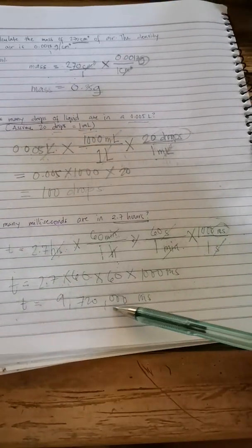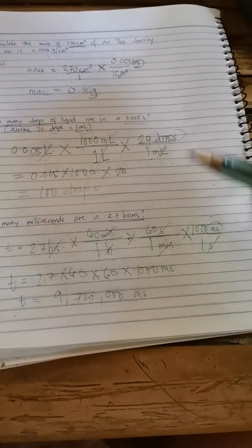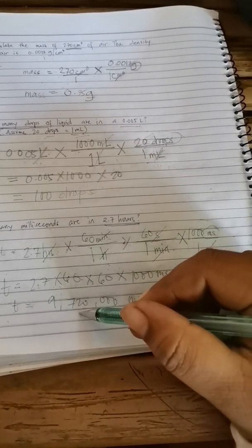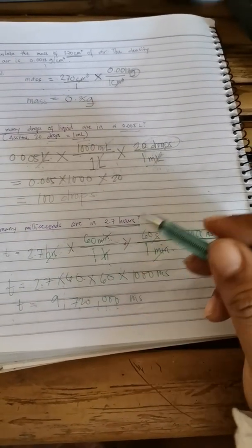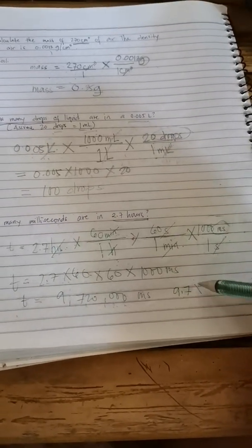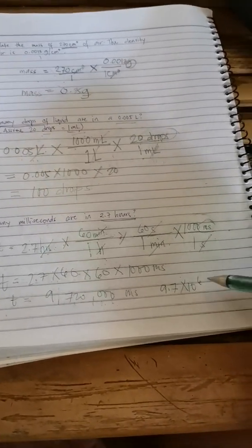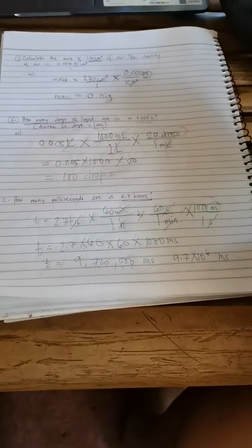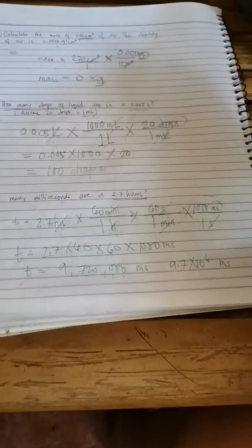scientific notation, we can just simplify this one into 1, 2, 3, 4, 5, 6. So 9.7 times 10 to the power of 6 milliseconds. Okay? Thank you.